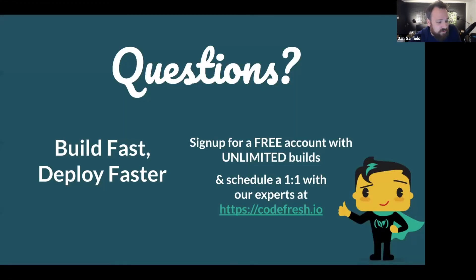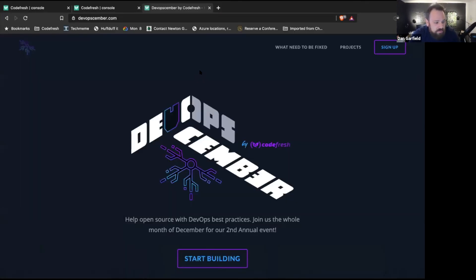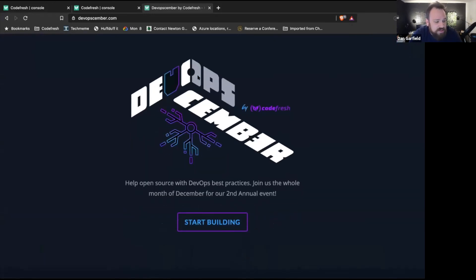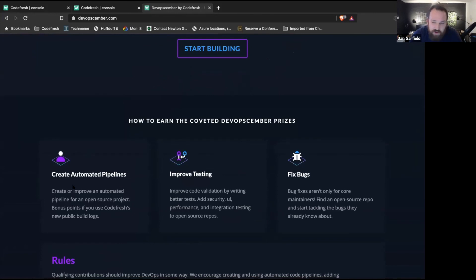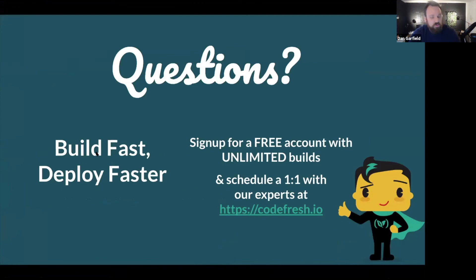You can get access to all this stuff at codefresh.io — you can try it out free. If you have lapsed on your trial and want to try this stuff out, feel free to contact us and open up a chat window to see if you can get access. Also I want to give a quick shout out to DevOpsSember, which is going on right now — it's a month-long distributed hackathon, our second year doing it. Basically you contribute to the DevOps of open source projects and earn cool swag. This could be creating a pipeline, fixing a bug, and it doesn't have to be using CodeFresh — you can do it with whatever platform. You have to make three changes, it's very easy, and you can earn some cool swag. With that, let's take questions.